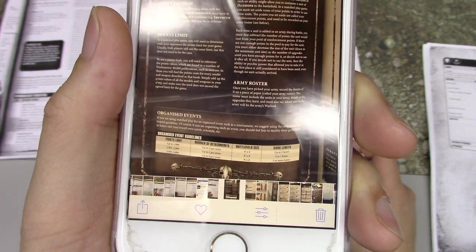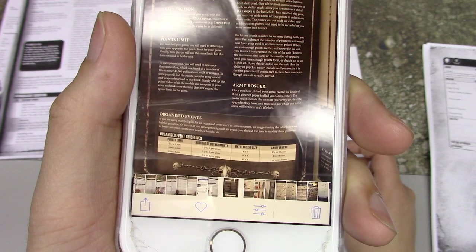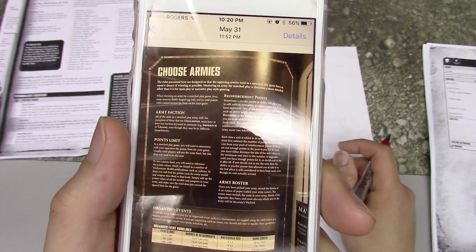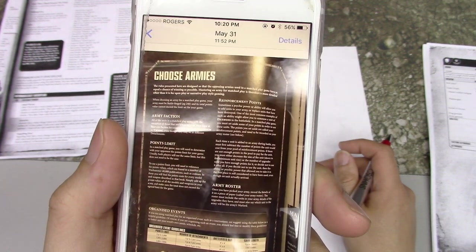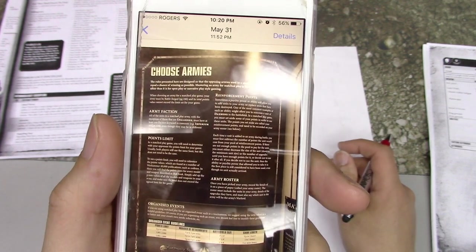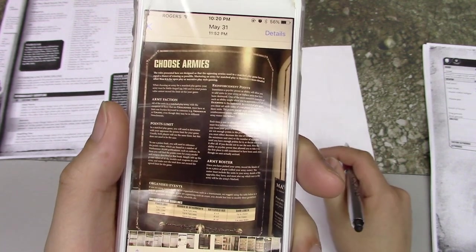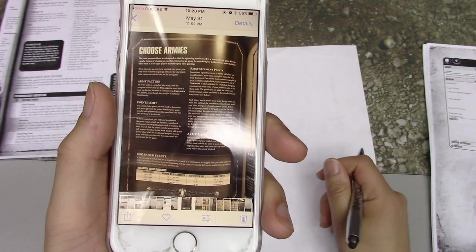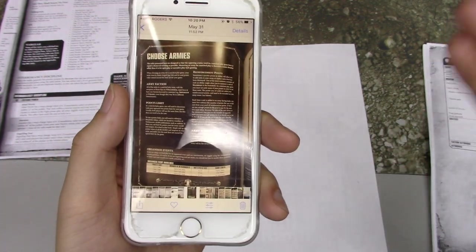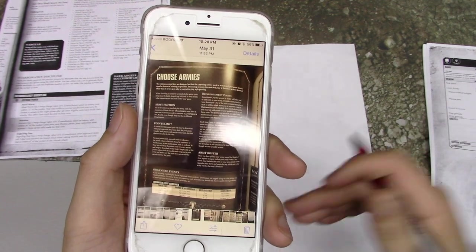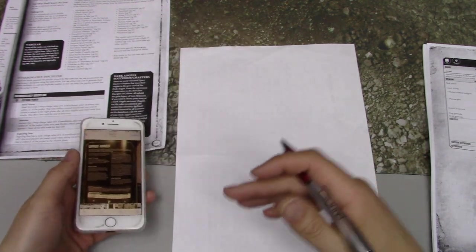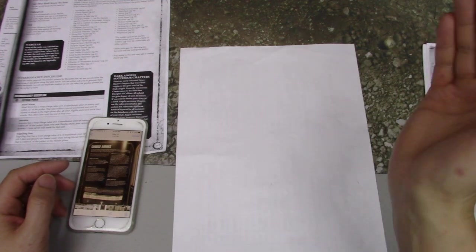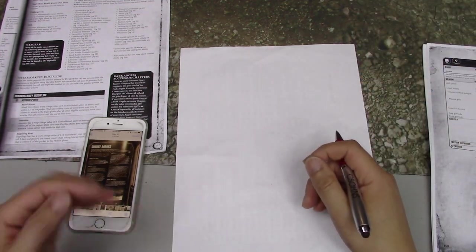First of all, you have to look at the rules for making a list. For most tournaments playing GW approved or ITC format, it's going to be 2,000 points and 3 detachments. Your whole army must share at least one faction keyword in common. That could be Imperium, or smaller ones like Dark Angels or Blood Angels, or Adeptus Astartes, Chaos, or Heretics.